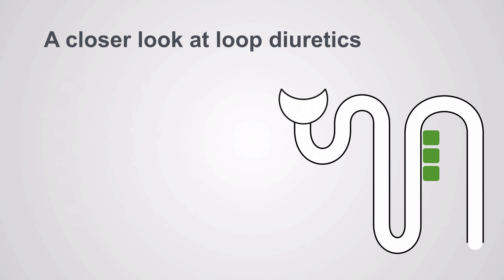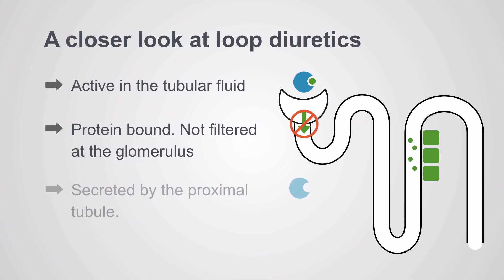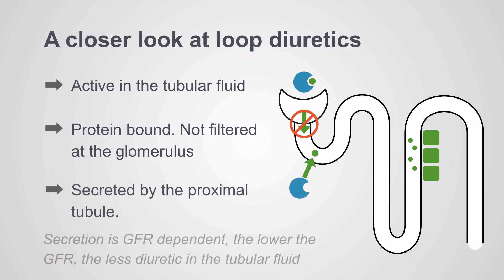Loop diuretics are active in the tubular fluid — they don't act from the basolateral membrane and don't get to their active site via the blood. They need to get into the tubular fluid to work. Loop diuretics are highly protein-bound, and any molecule that's protein-bound can't be filtered at the glomerulus. So the way it enters the tubule is by secretion in the proximal tubule, and that secretion is GFR-dependent — hence the lower the GFR, the less diuretic that makes it to the tubule.